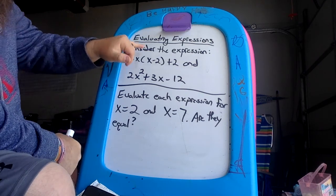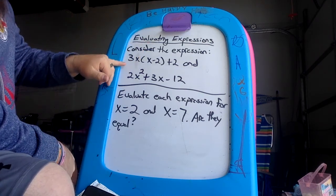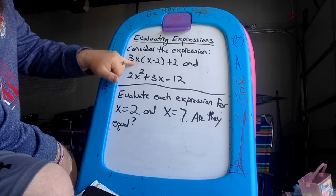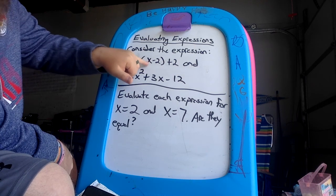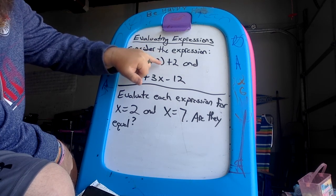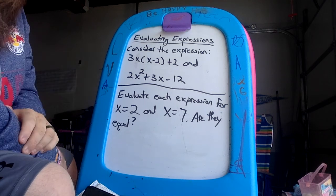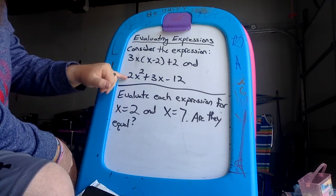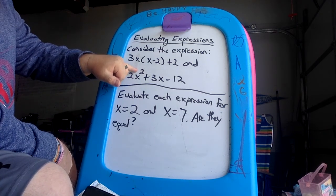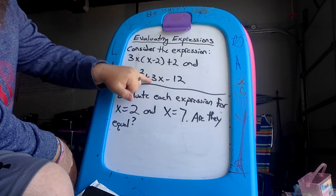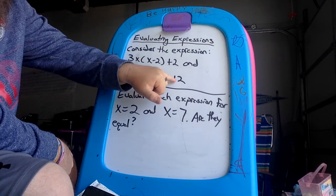Okay, so consider the expression. One expression I had is 3x parentheses x minus 2 close parentheses plus 2. So that's one expression. The second expression is 2x squared plus 3x minus 12.